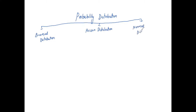So we are going to discuss these three distributions, and we are going to discuss questions about them. First, I am going to discuss the probability distribution. We are going to discuss the terms random experiment and random variable.